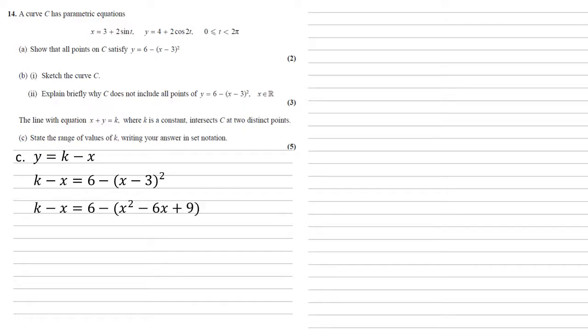Expanding x minus 3 squared gives us x squared minus 6x plus 9. Simplifying the right hand side gives us k minus x equals minus x squared plus 6x minus 3. And moving all of our terms over to the left gives us x squared minus 7x plus k plus 3, which is a quadratic.